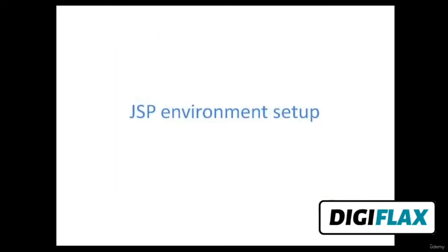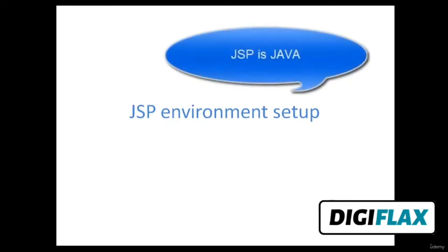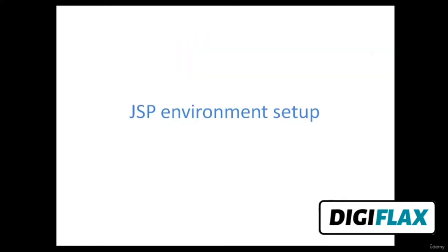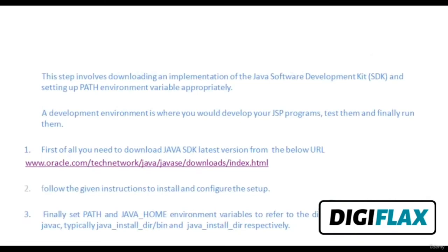In this video tutorial, we are going to learn how the JSP environment is set up. As we know that JSP uses Java, we need to tell the operating system where Java is installed. This step involves downloading and implementing the Java Software Development Kit (SDK) and setting a PATH environment variable appropriately. A development environment is where you would develop your JSP programs, test them, and finally run them.